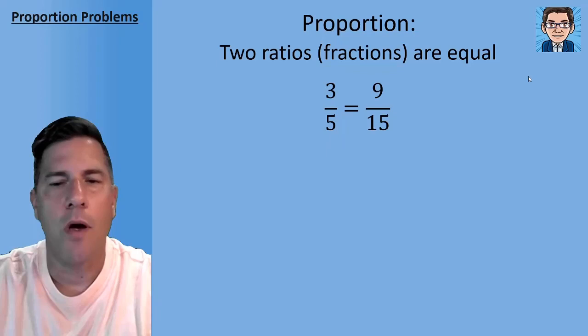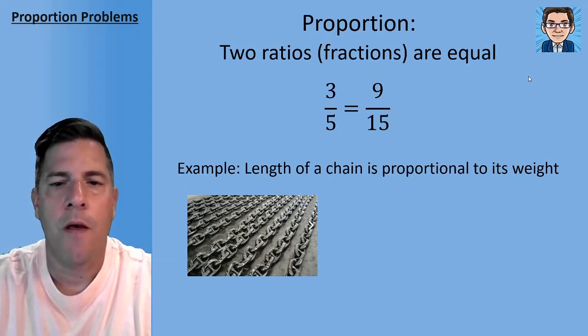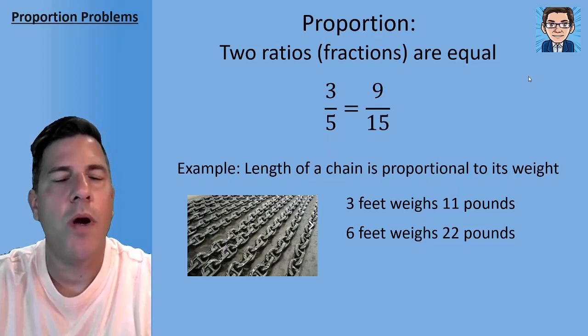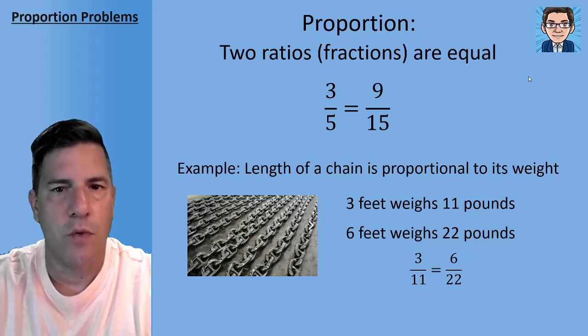So what's an example of a proportion? Well if we have a length of chain, we've got this big heavy chain, it's going to be proportional to its weight. So if we had three feet of the chain, it might weigh 11 pounds. So if we had six feet of the chain, then it would weigh 22 pounds. And if you see that proportion, 3 over 11 equals 6 over 22.